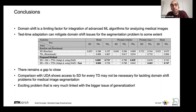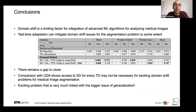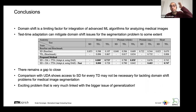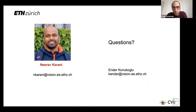Conclusions: domain shift is a limiting factor — test-time adaptation can mitigate the problem for segmentation, at least to some extent. There's still a gap to close, which is exciting. Comparison with UDA shows you may not need source-domain access for retraining at each target domain. Inspiration from neuroimaging and unsupervised segmentation approaches could help close this gap. This problem is very much linked to the broader issue of generalization in neural networks.